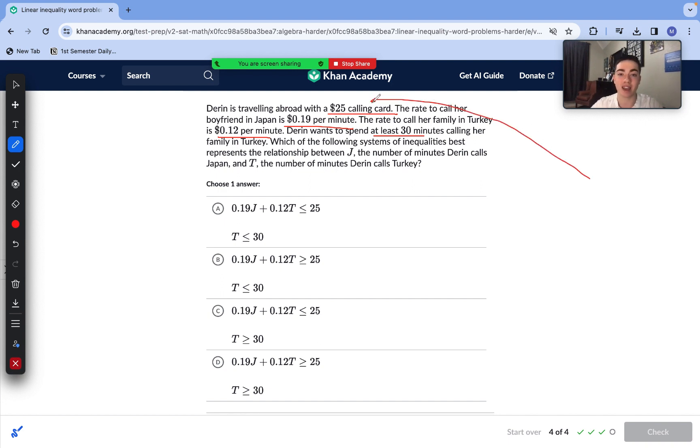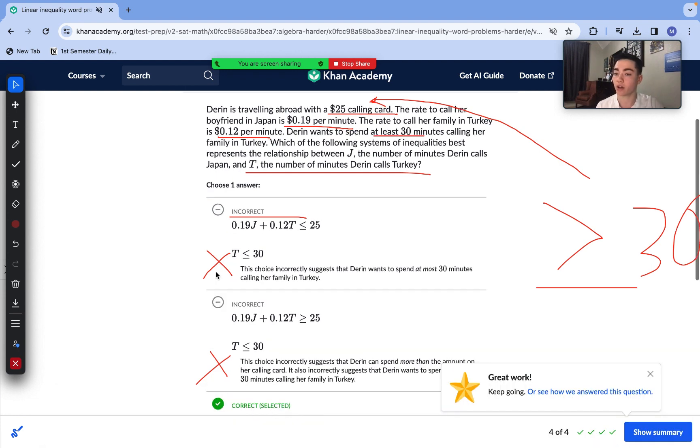So she only has $25. That means we cannot exceed this amount. So it is a hidden inequality. Our cost needs to be less than or equal to $25. It cannot exceed $25. Meaning that answer choice B and answer choice D are automatically incorrect. And then of course the number of minutes that Doreen calls Turkey needs to be at least 30. So at least is greater than or equal to 30. So that matches answer choice C. Answer choice C is correct here.